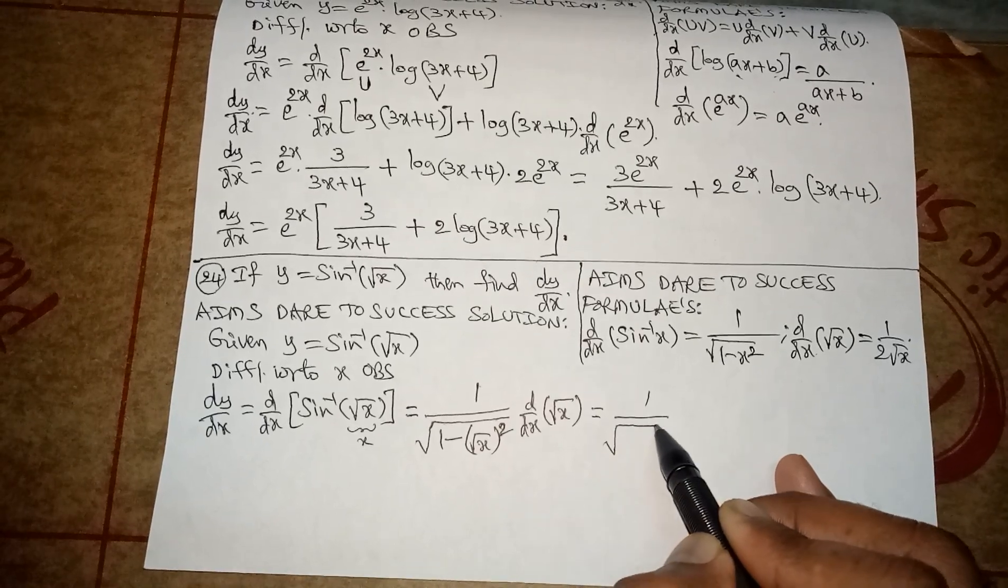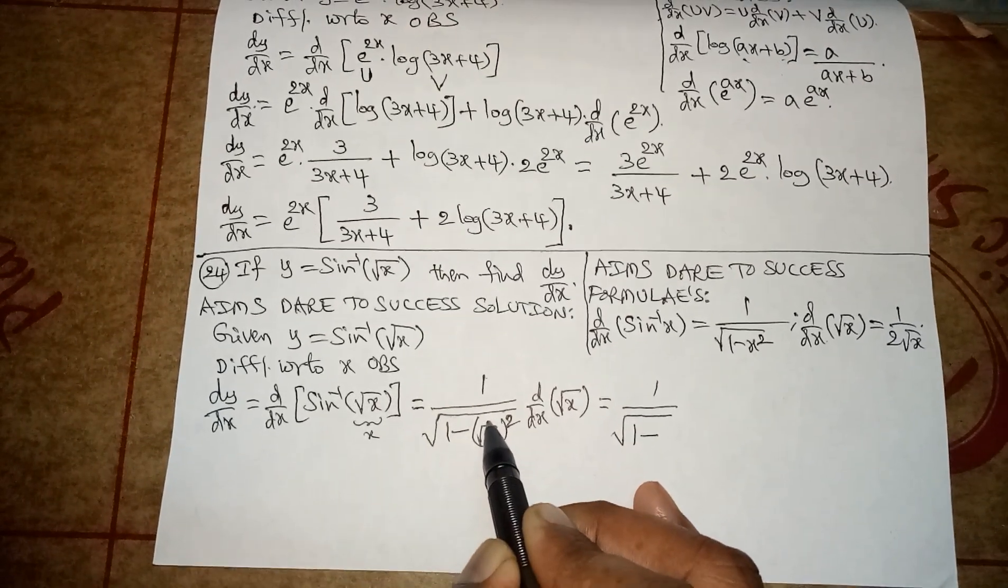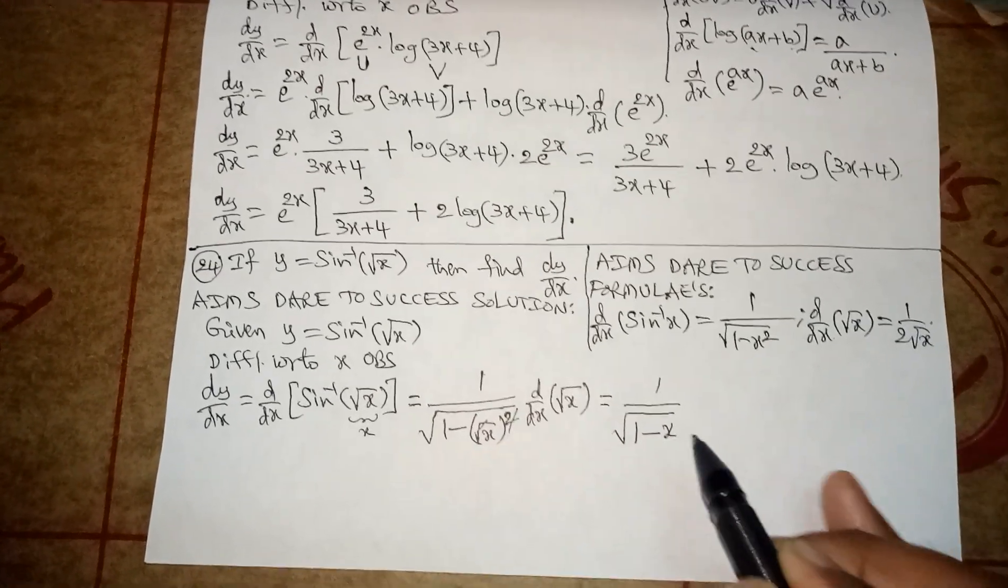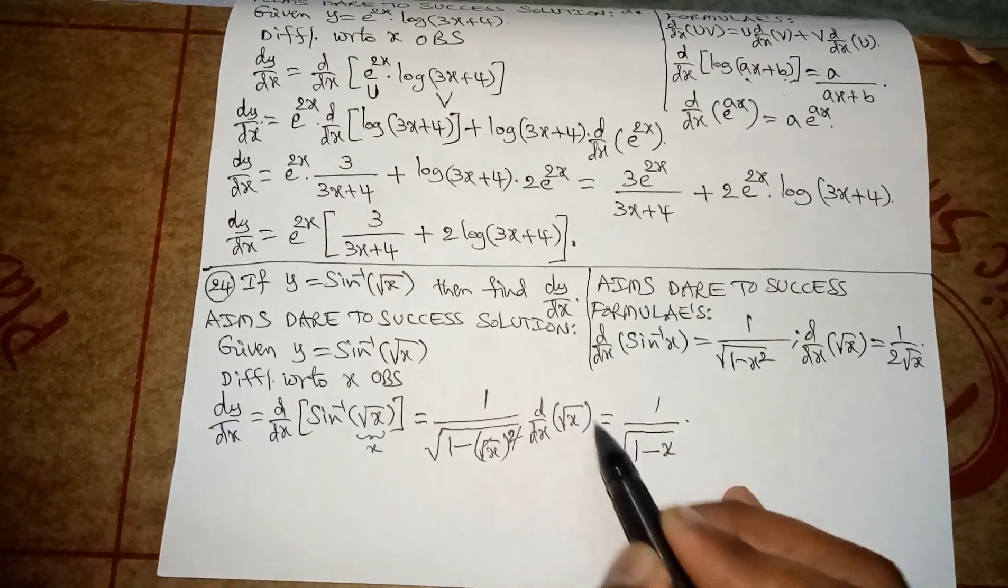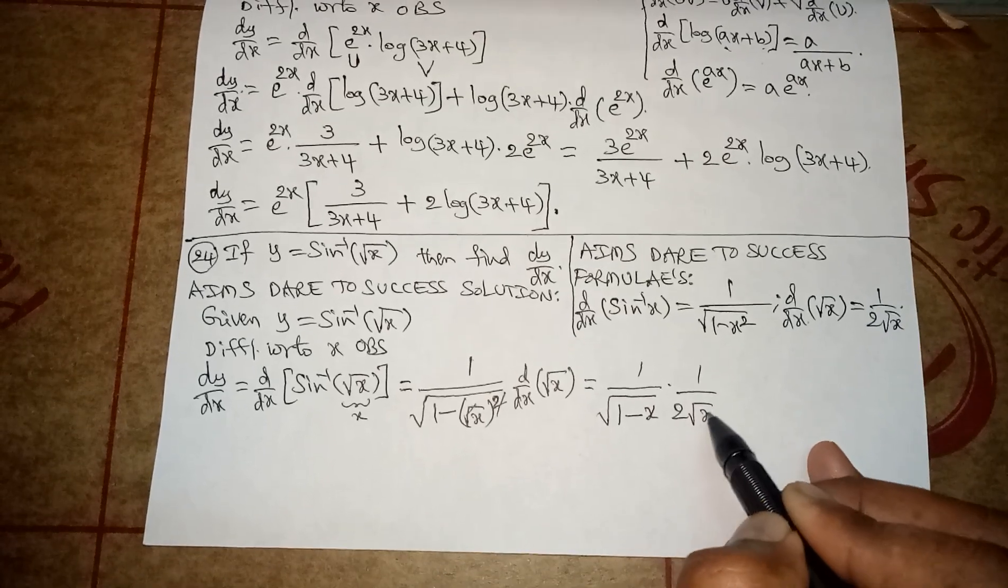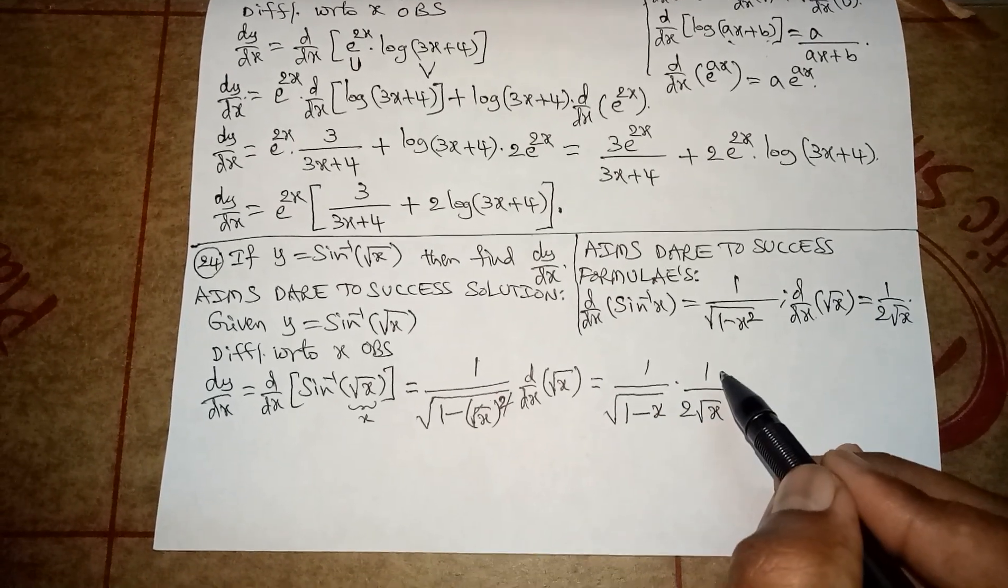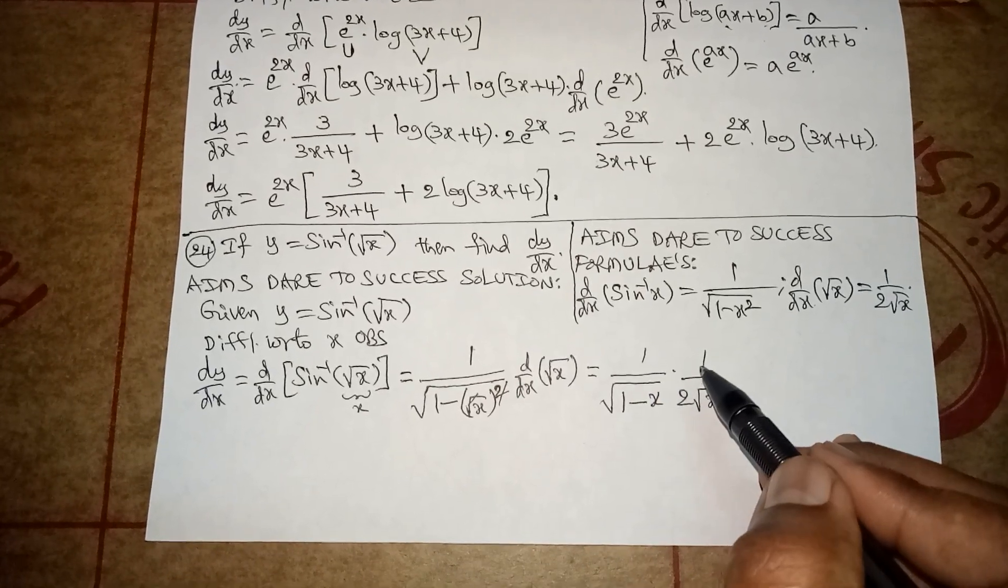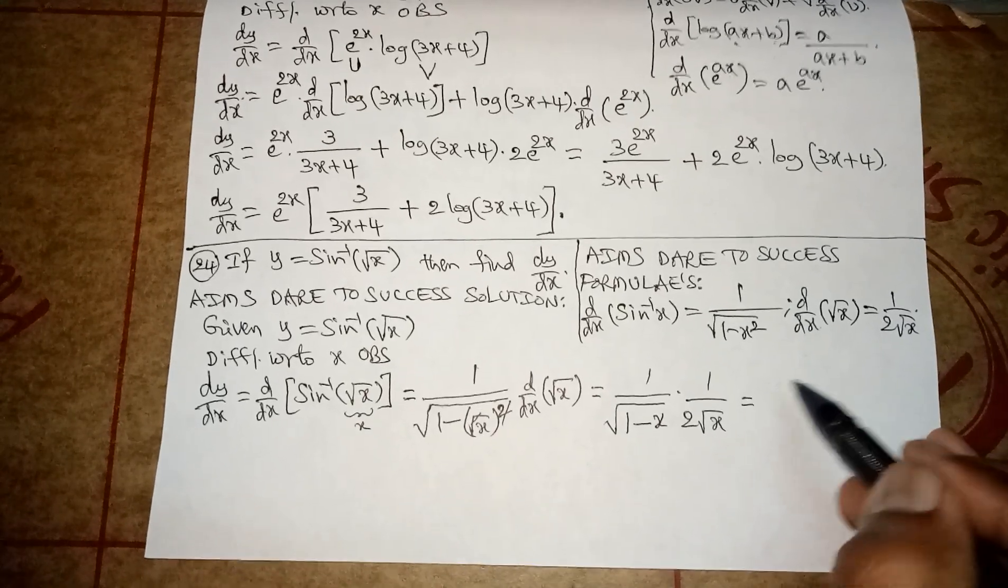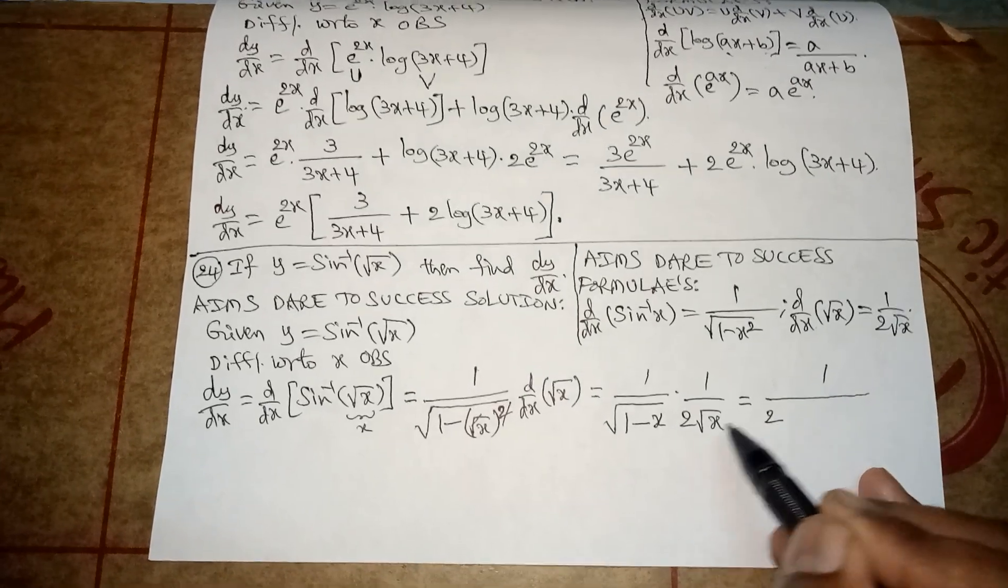Into d by dx of root x is 1 by 2 root x. If you want to continue, you can simplify, otherwise you can leave this. So simplification means 1 into 1 is 1 divided by 2 into root x into root 1 minus x is under root of x into 1 minus x.